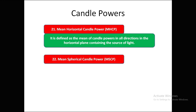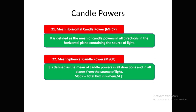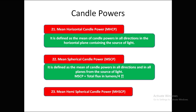Mean spherical candle power (MSCP) is the mean of candle powers in all directions and in all planes from the source of light. It covers all planes and is represented as total flux in lumens divided by 4π.